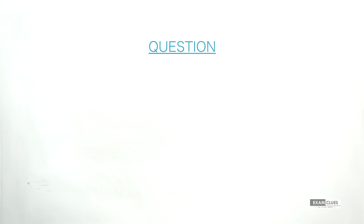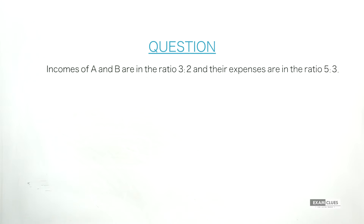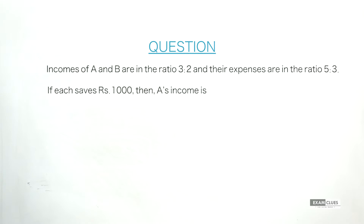Let's read the question. The incomes of A and B are in the ratio of 3:2, and their expenditures are in the ratio of 5:3, and each of them saves 1000 rupees. The incomes of A and B are in the ratio of 3:2, their expenditures are in the ratio of 5:3, and each of them saves 1000 rupees.